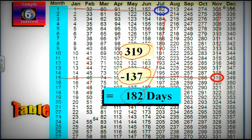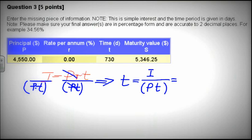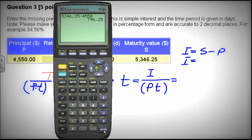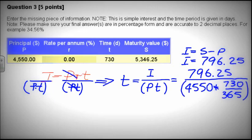182, that's July 1st. So the answer is July 1st. Question 3: Solving for R, I is equal to PRT. Solving for T, T is equal to I divided by PT.